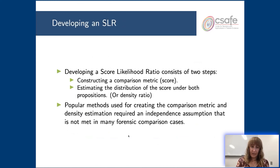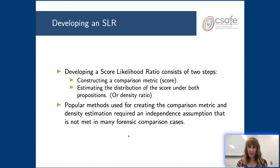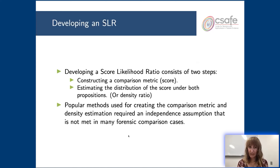To develop an SLR system, we need a good comparison metric to compute the score and a good method of estimating those densities G under both propositions. Some methods people use — like machine learning methods or kernel density estimation — rely on the assumption of having independent samples. In the case of pairwise forensic comparisons, we do not have that independence. I'll talk more about how this independence assumption is not met for forensic comparisons and why that's an issue for creating a good comparison metric and estimating the densities.